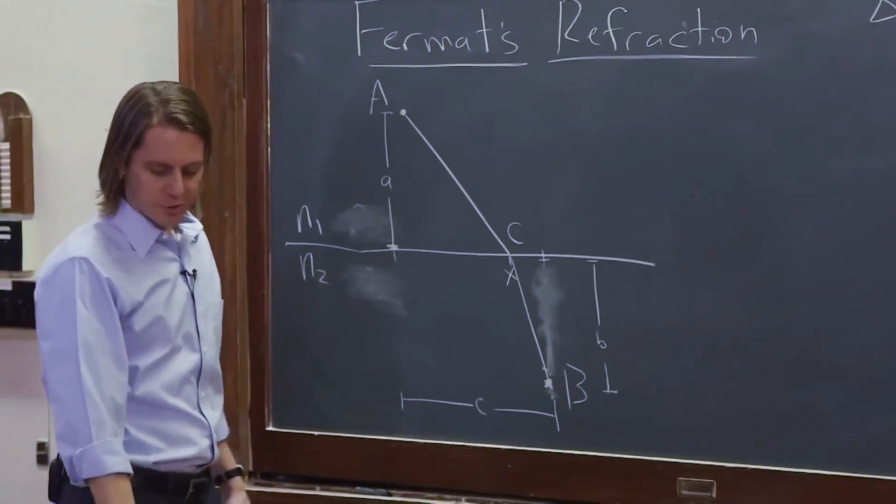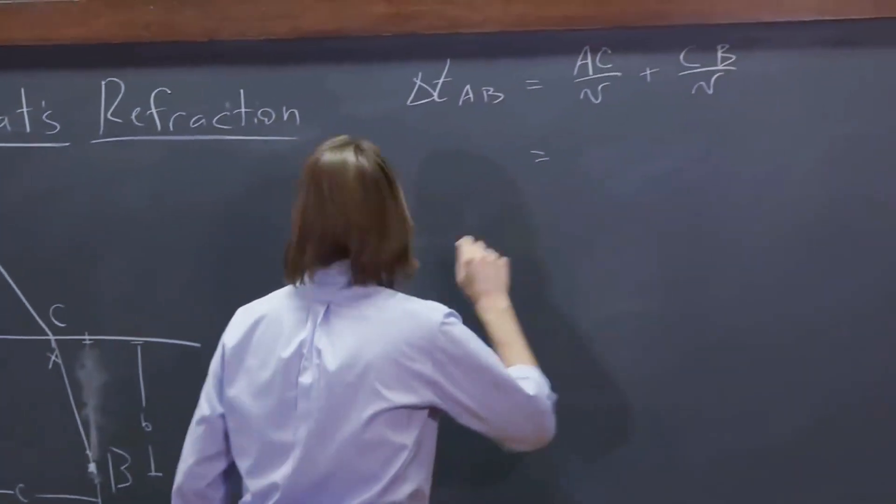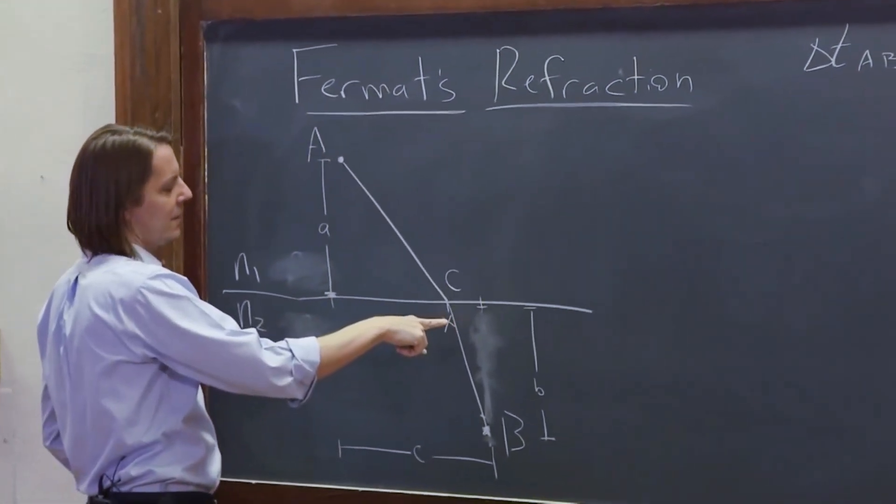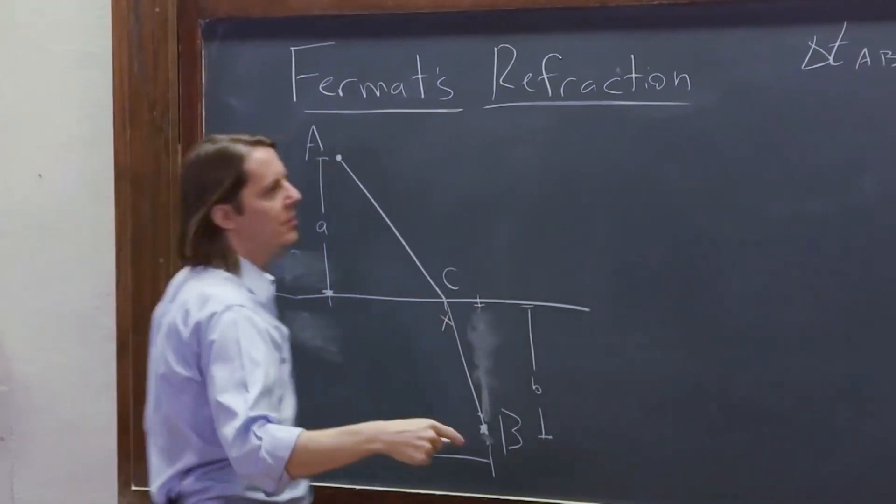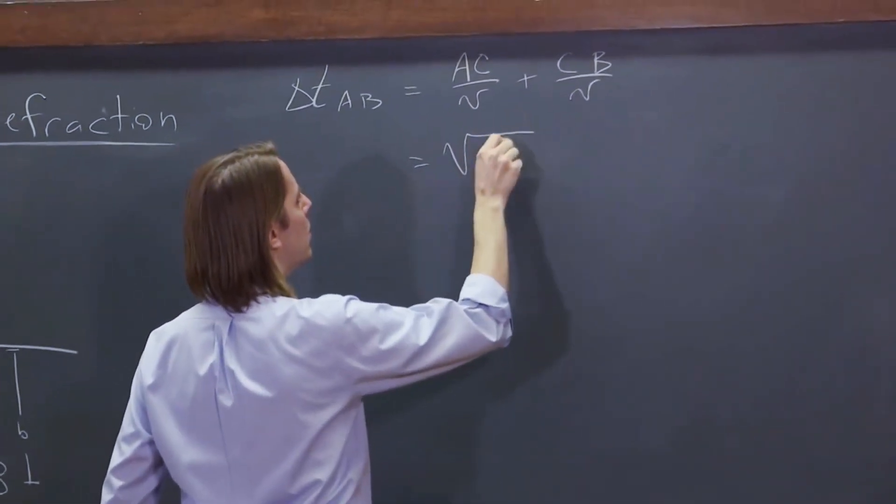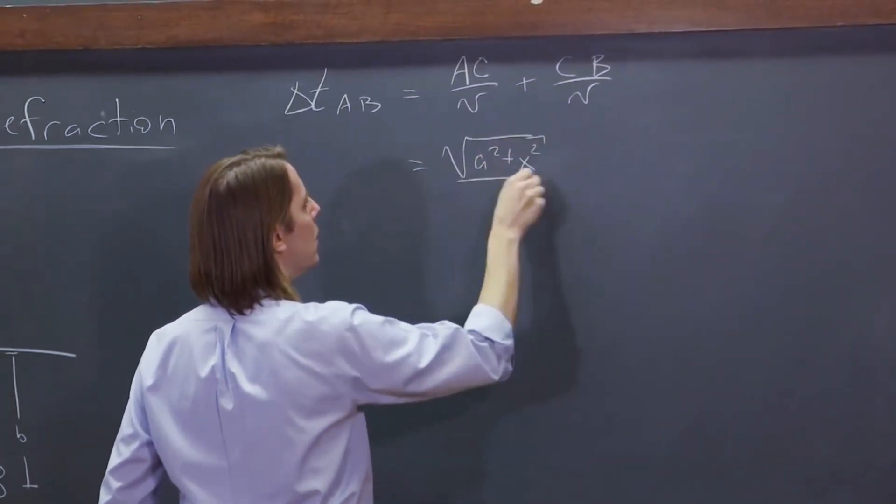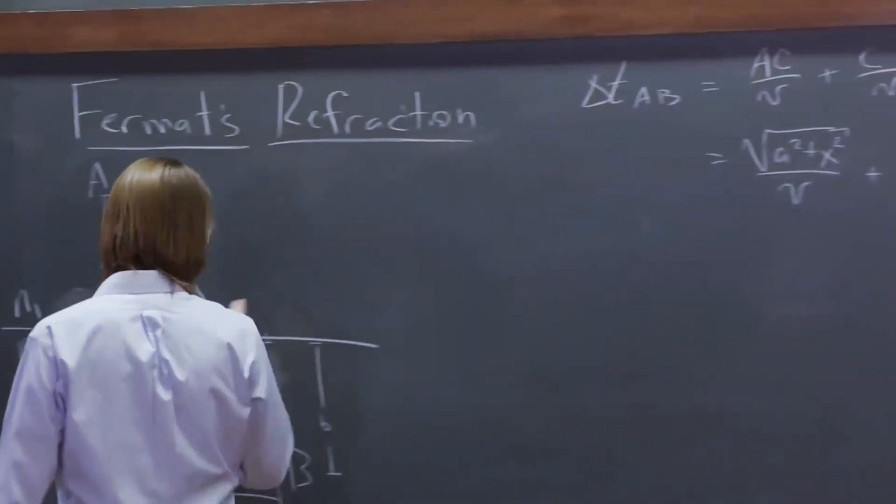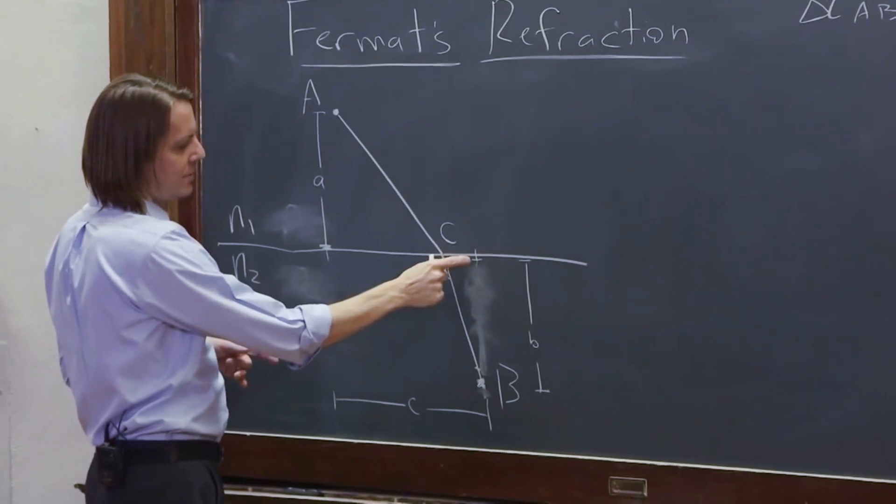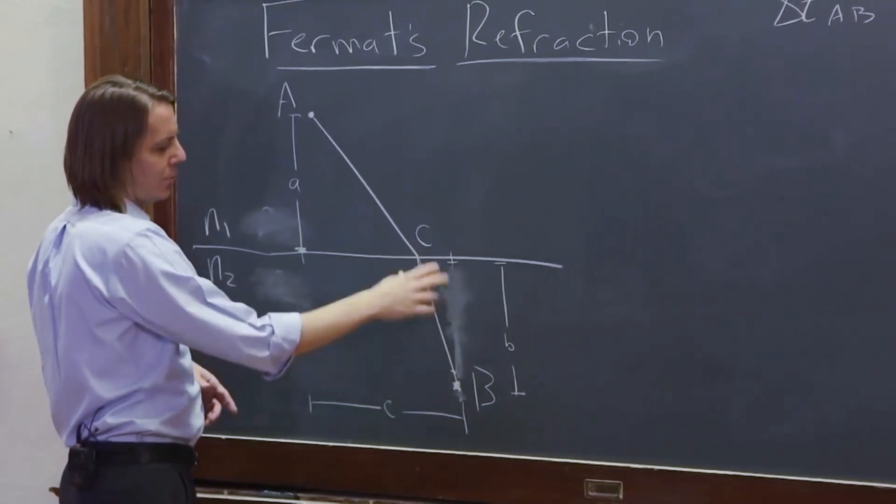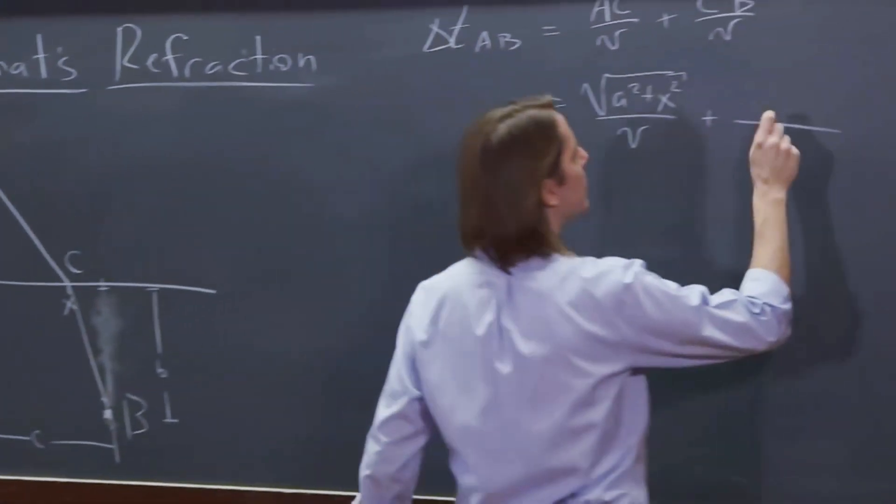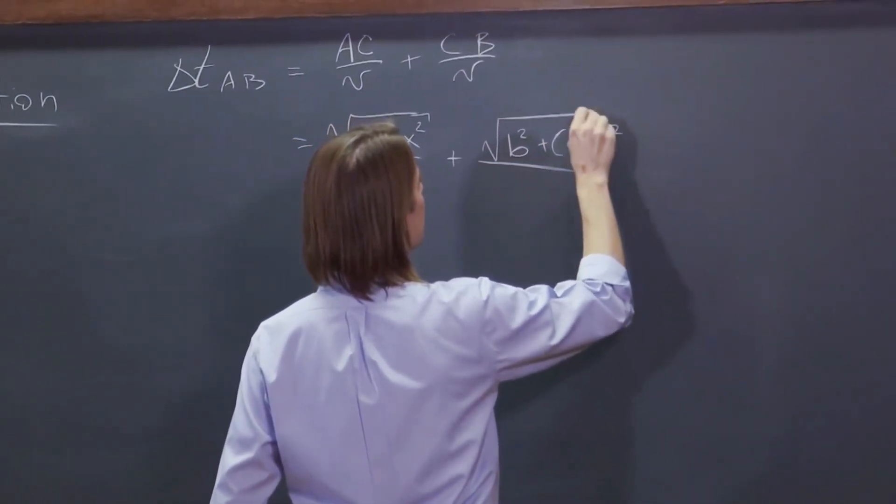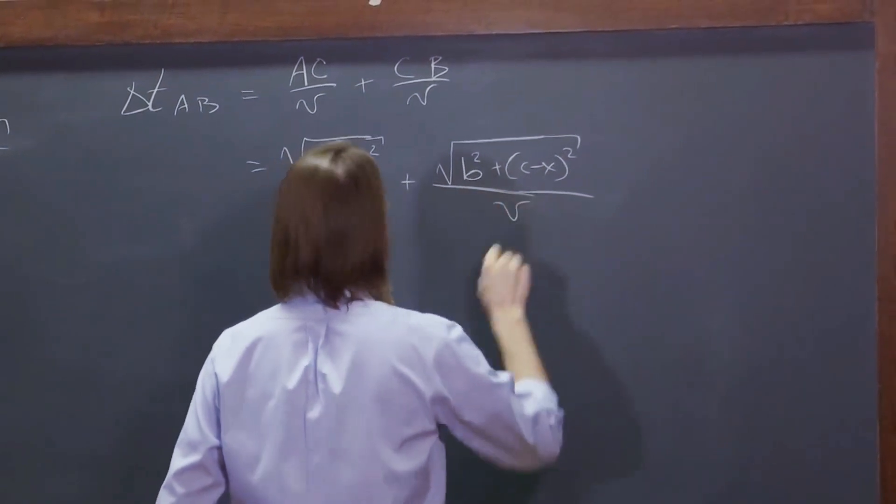And then we start doing some geometry, and we say AC, well, it's just like last time. We have A here. We have X there. It's the square root of A squared plus X squared over the speed plus C to B is the square root of this little piece, which is C minus X squared plus B squared. So plus the square root of B squared plus C minus X squared, again, over B.